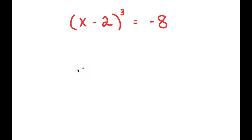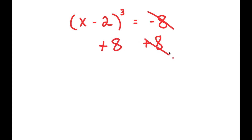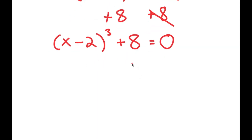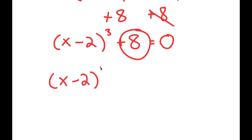So in this problem, I have (x minus 2) to the power of 3 is equal to negative 8. To solve this, I'm going to first start by adding 8 on both sides. These two cancel out, and I get (x minus 2) to the power of 3 plus 8 is equal to 0. From here, I can rewrite 8 as 2 to the power of 3.